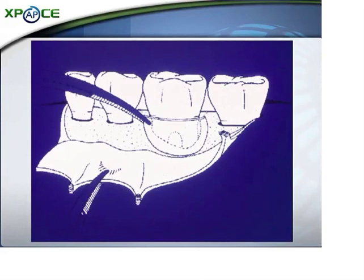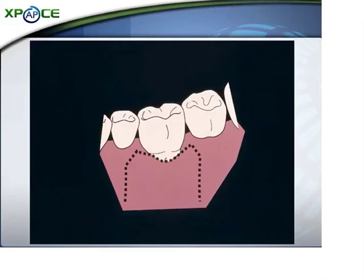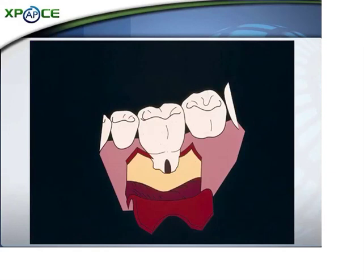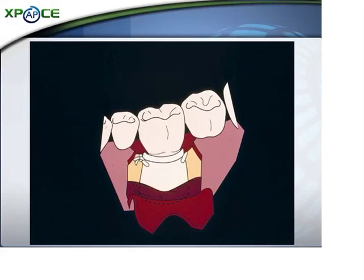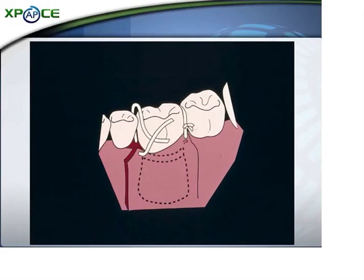In previous years we used to use non-resolvable Teflon membranes. Today we use resolvable ones, but we modify the incision so that we do a coronally positioned flap. We go short of the papilla, and we go intracrevicularly on the buccal, and then we open the flap as you see here on the next slide. Then we clean out the defect, and then put a piece of membrane over this furcation. Then we hike the flap up over the top of this, over the contact points.